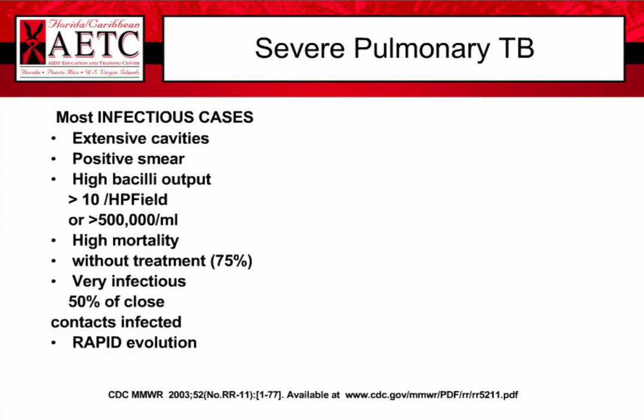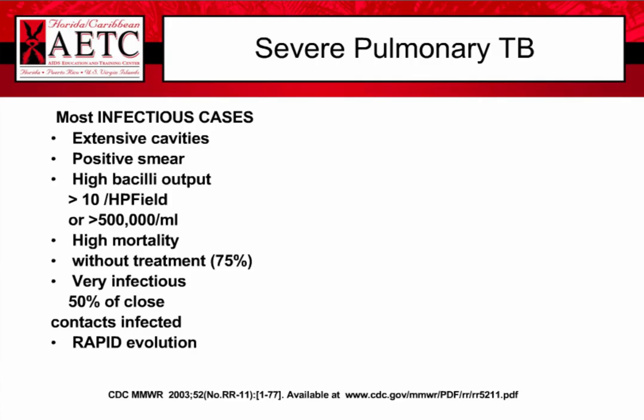Severe pulmonary TB — the most infectious cases — will have extensive cavities, positive smears, and a very high bacillary load. Mortality without treatment can be up to 75%. These patients will be very infectious, with up to 50% of close contacts becoming infected, and disease progression will be quite rapid.